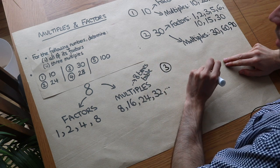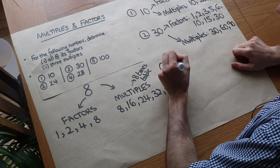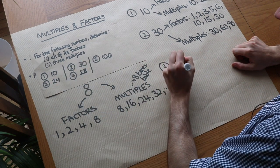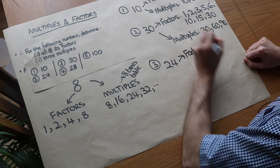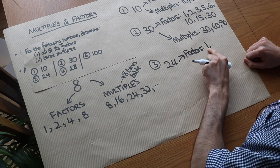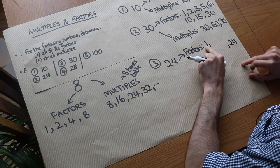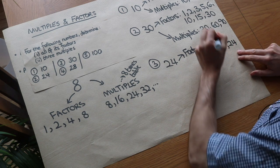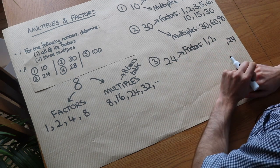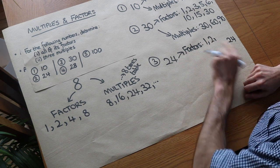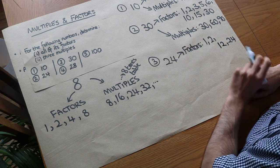For factors, here's a slightly quicker method — most factors come in pairs. Take 24: notice that when you divide 24 by 1, it gives you 24. So if 1 is a factor, 24 is also going to be a factor. We write these as pairs: 1 times 24 gives 24. Now consider 2 — it certainly goes into 24. 2 times what gives 24? 24 divided by 2 is 12, so 12 is also a factor.